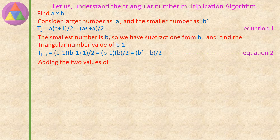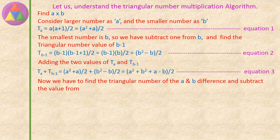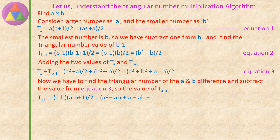Equation 3: Adding the two values of Ta and T(b−1): Ta plus T(b−1) equals (a squared plus a) divided by 2 plus (b squared minus b) divided by 2, equals (a squared plus b squared plus a minus b) divided by 2. Equation 4: Now find T(a−b) and subtract it from equation 3. T(a−b) equals (a minus b) into (a minus b plus 1), divided by 2, which expands to (a squared minus 2ab plus b squared plus a minus b) divided by 2.